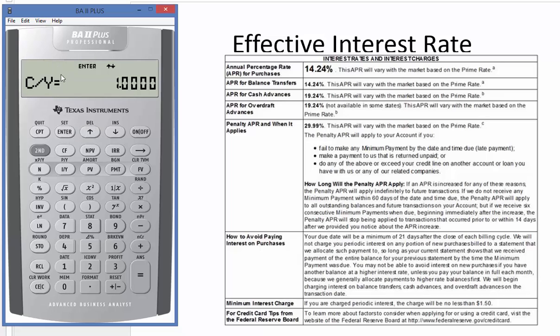Then we will go up here and this is how often the interest rate compounds per year. In this case, we assume it's daily, so 365 days in a year. Press enter, go up, and this is the rate we are looking for, the effective annual rate or EAR.